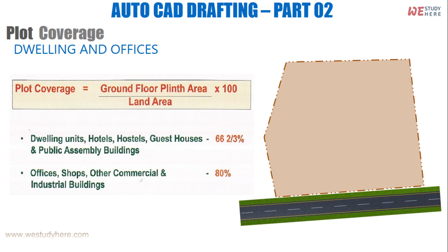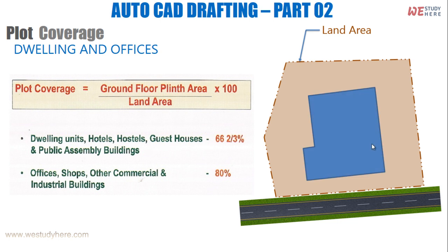For dwelling and offices, here I have an equation: plot coverage equals ground floor plinth area divided by land area, multiplied by 100. The land area is the denominator — this is the total area of the plot as shown in the sketch. In the numerator, we have the ground floor plinth area, which is the footprint of the proposed building at ground floor level.